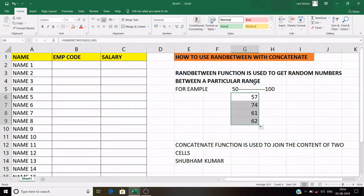Now let me tell you how to use CONCATENATE function in action. CONCATENATE function is used to join the content of two cells.